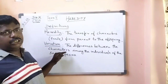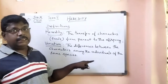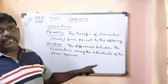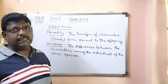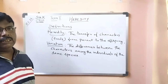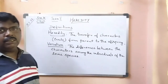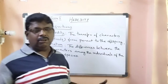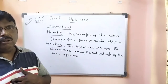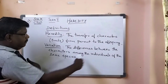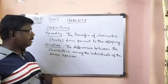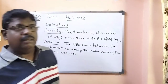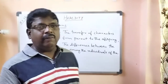Next definition: Variation. Variation refers to the differences between the characters among the individuals of the same species. For example, if you take human beings, each and every individual is different, but together we are all human beings. So these differences are called variations.